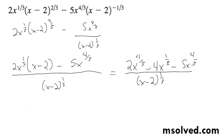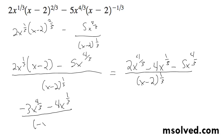And this becomes negative 3x to the 4/3rds minus 4x to the 1/3rd over x minus 2 to the 1/3rd. So I can factor out x to the 1/3rd on top.